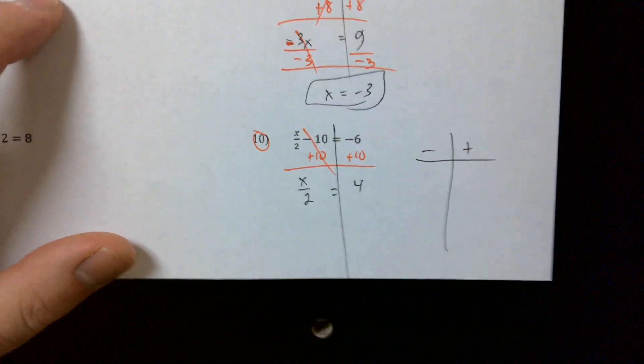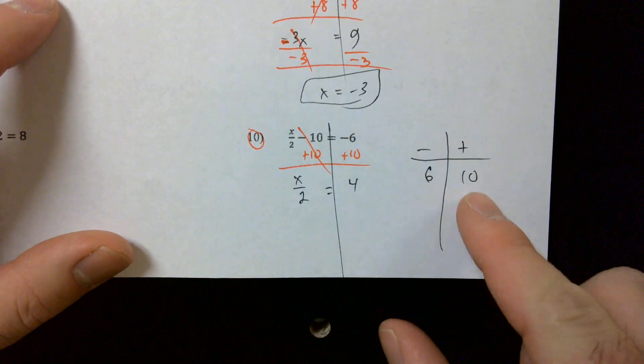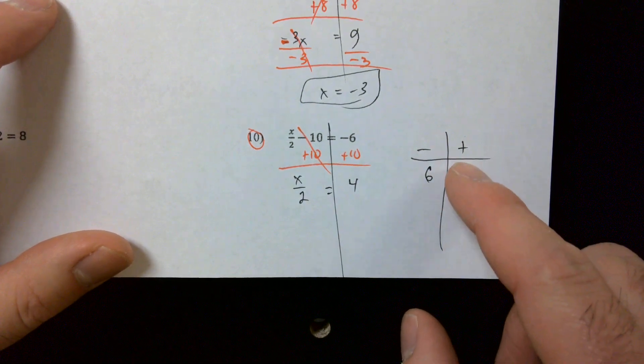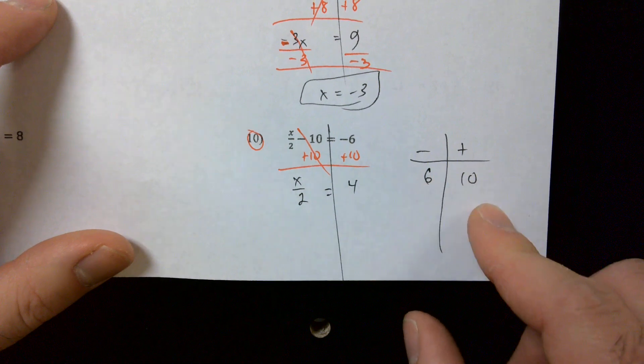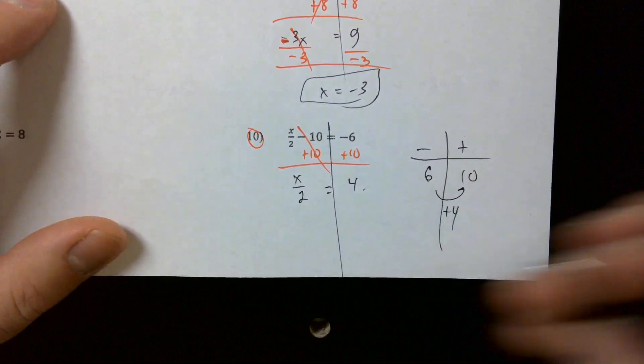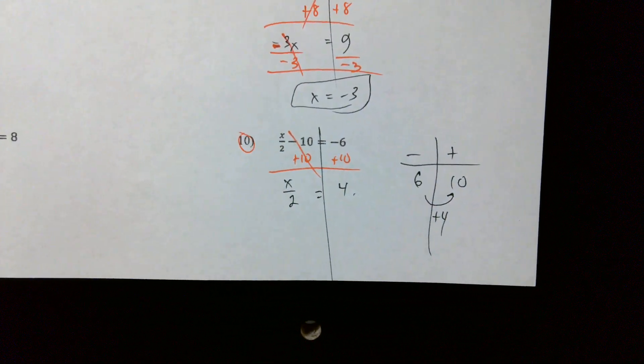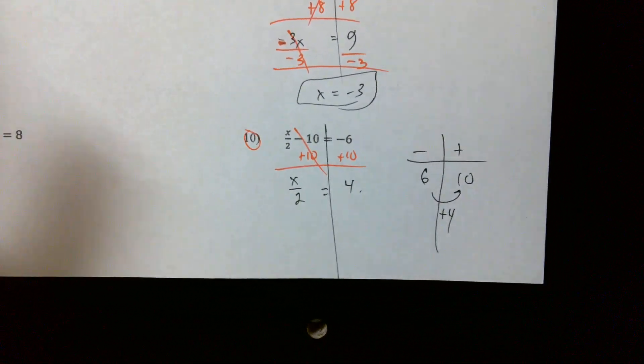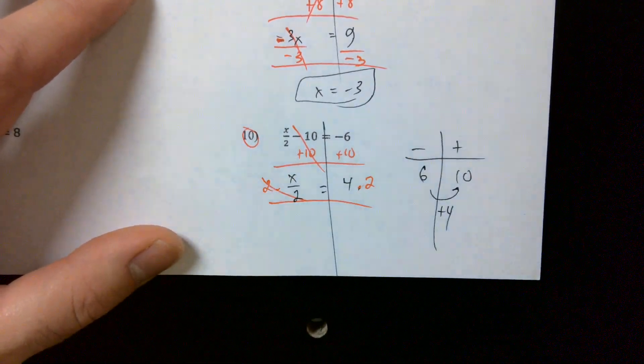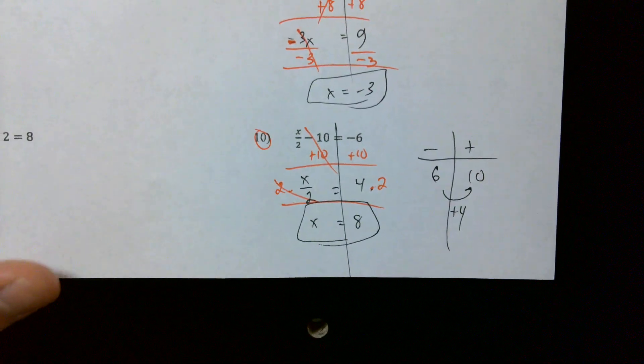Again, we've got our minus and pluses. I've got six minuses, ten pluses. I've got more pluses than minuses, so my answer is going to be positive and I've got four more here. So that's what I get, positive four. Now x divided by two, what's the opposite of dividing by two? Multiplying by two. And x gives me eight. Great job.